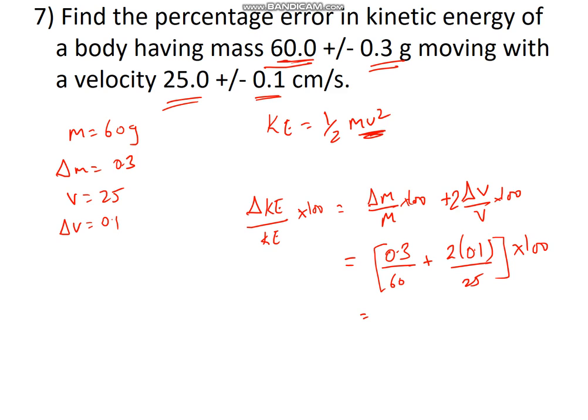Now once you simplify this, you can get the answer. We can write this as 3 by 600 and this can be written as 2 upon 250. Multiply numerator and denominator by 10. This will become 1 by 200 and this will become 1 by 125.